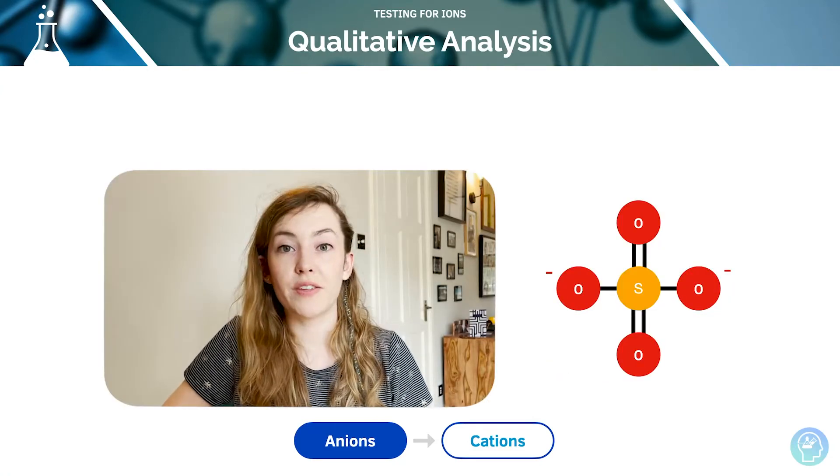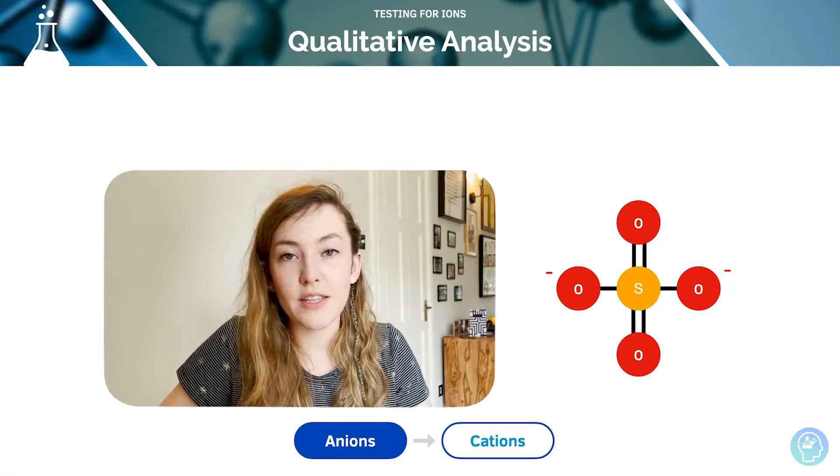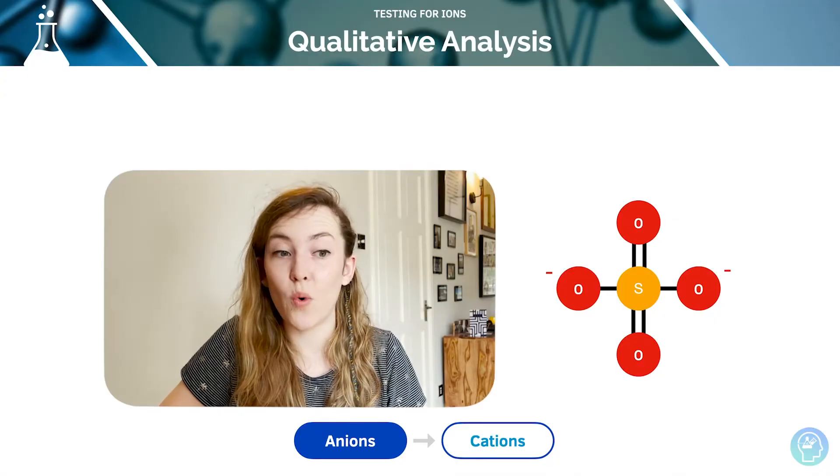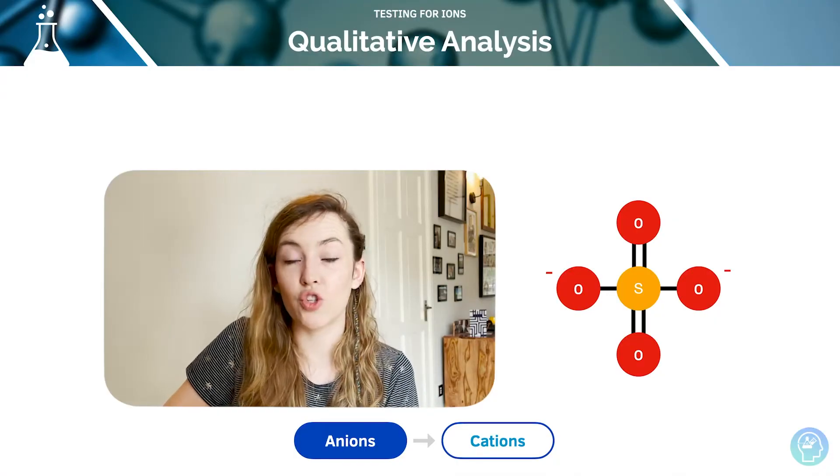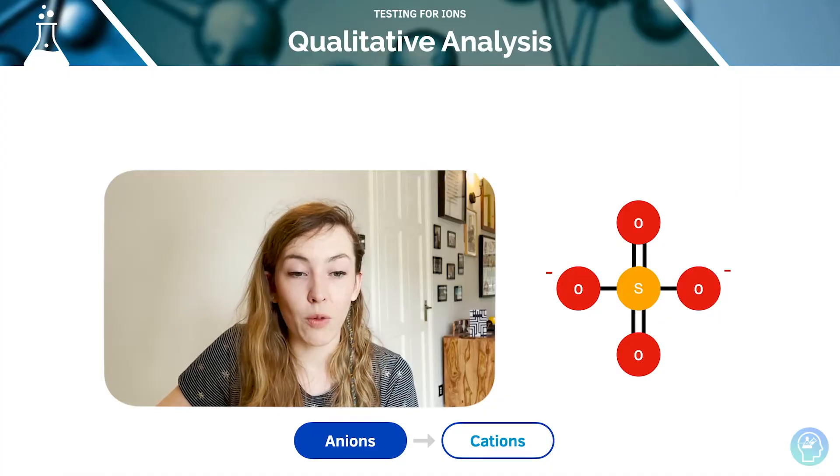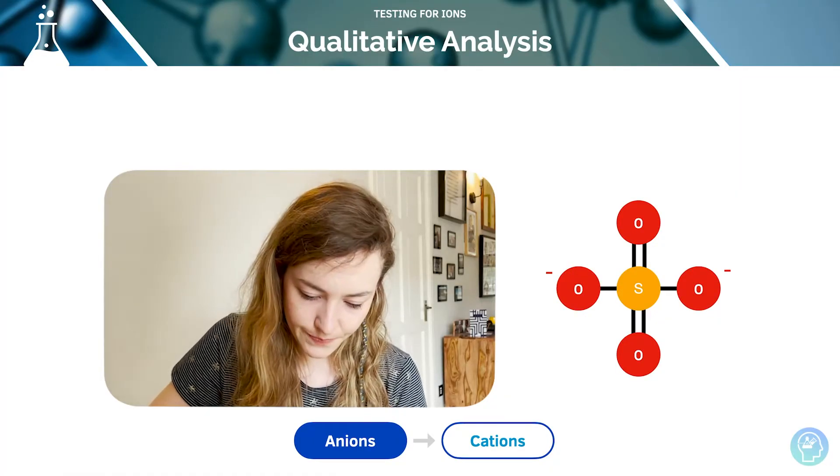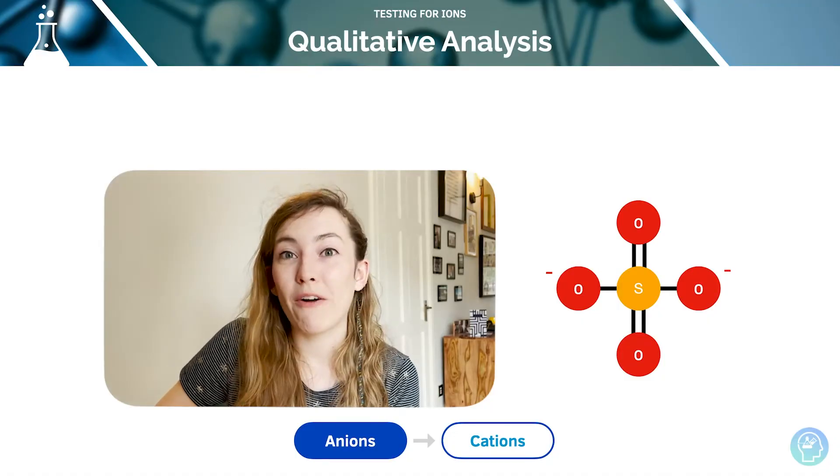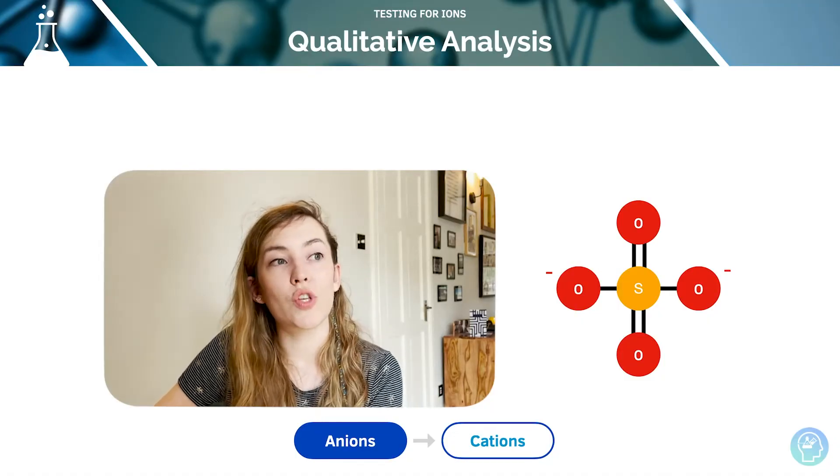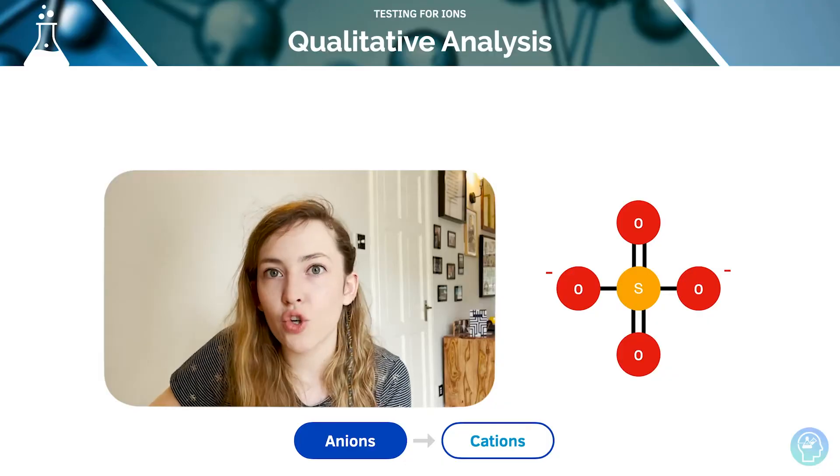For our sulfate ions, we can test using displacement with barium ions in a solution. As long as we can get barium ions in there, then it will make barium sulfate, which is an insoluble white precipitate. In order to get barium ions in there, we could use barium chloride, barium nitrate, for example.